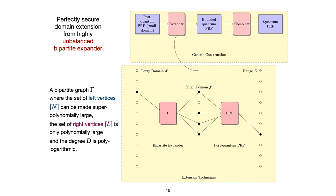Here is a high-level description of our construction. From the post-quantum PRF, with small domain, we let it pass through the extender and combiner to get the final quantum PRF. And in the extender part, this is the most important part. We know that a perfectly secure domain extension can be achieved from a highly unbalanced expander.